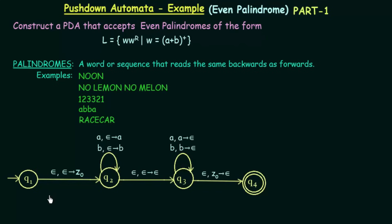Here is the pushdown automata for this language. It has four states, starting with Q1. In Q1, we don't read any input symbol (epsilon), and we don't pop anything from the stack — but we push the symbol Z0 to the stack to denote the bottom of the stack. This allows us to know when we have reached the end of the stack.